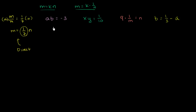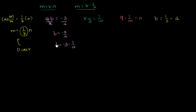Now ab = −3. If we divide both sides by a, we get b = −3/a, which we can also write as b = −3·(1/a). This matches the inverse variation pattern — one variable equals a constant times 1 over the other variable, with constant −3. So here they vary inversely.